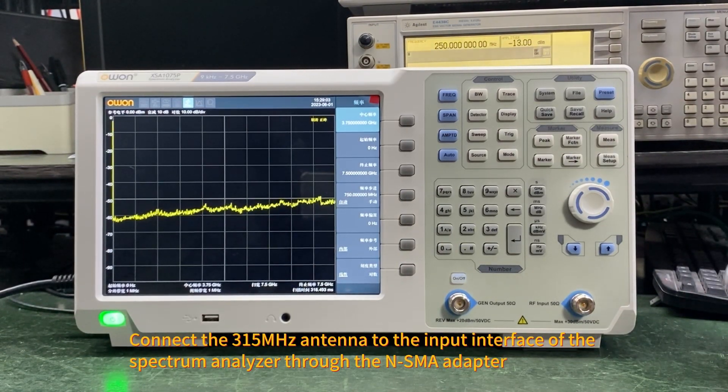Connect the 315 MHz antenna to the input interface of the Spectrum Analyzer through the N-SMA adapter.